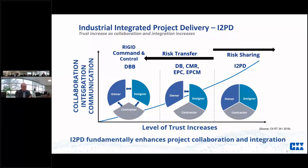Design-bid-build intentionally separates the owner, designer, and contractor — it's a pushing of risk versus a sharing of risk. EPC or design-build puts the contractors and designers together, but owners are still segregated from those two partners. Whereas in I2PD, everybody's in the sandbox together — everybody's playing together and everybody is sharing that risk. This level of trust won't happen right out of the gate, but as the parties begin to protect one another and have one another's back, you'll witness that trust ratcheting up over time.